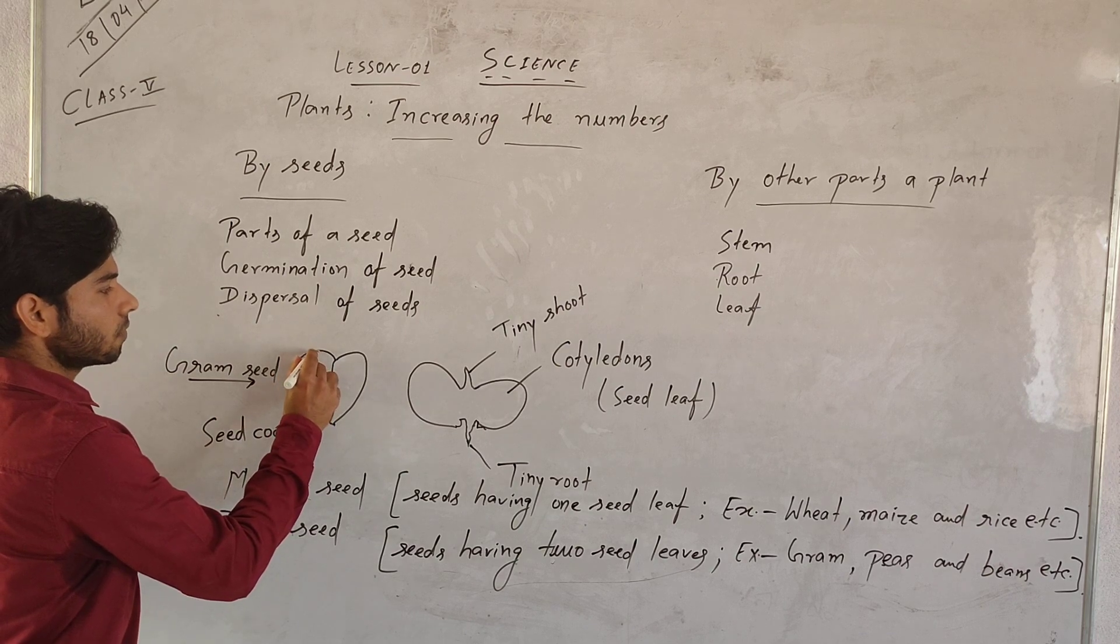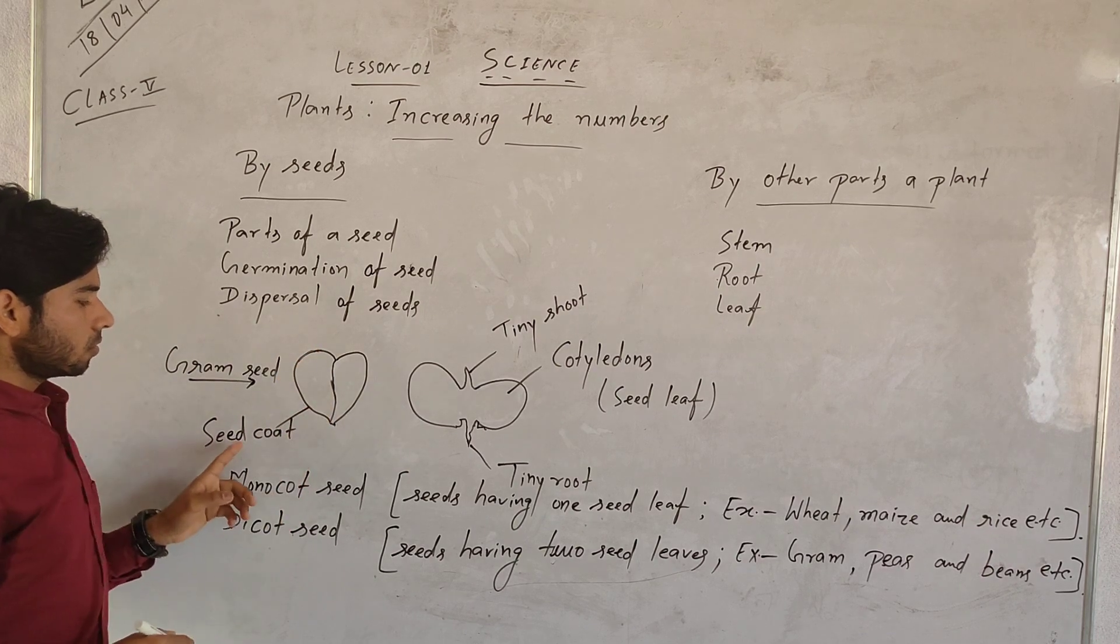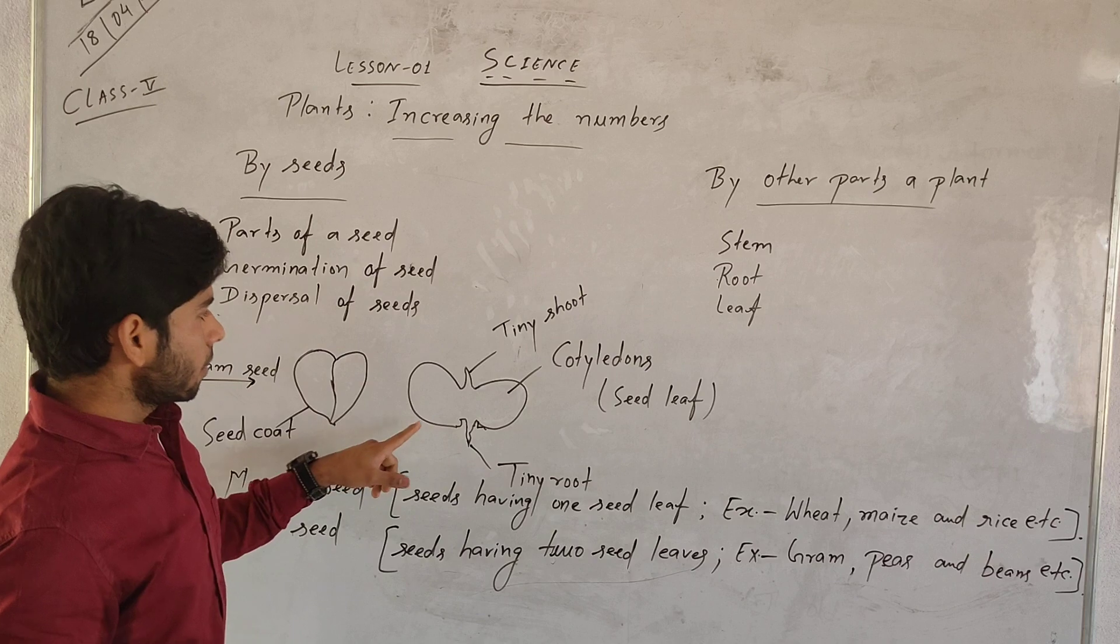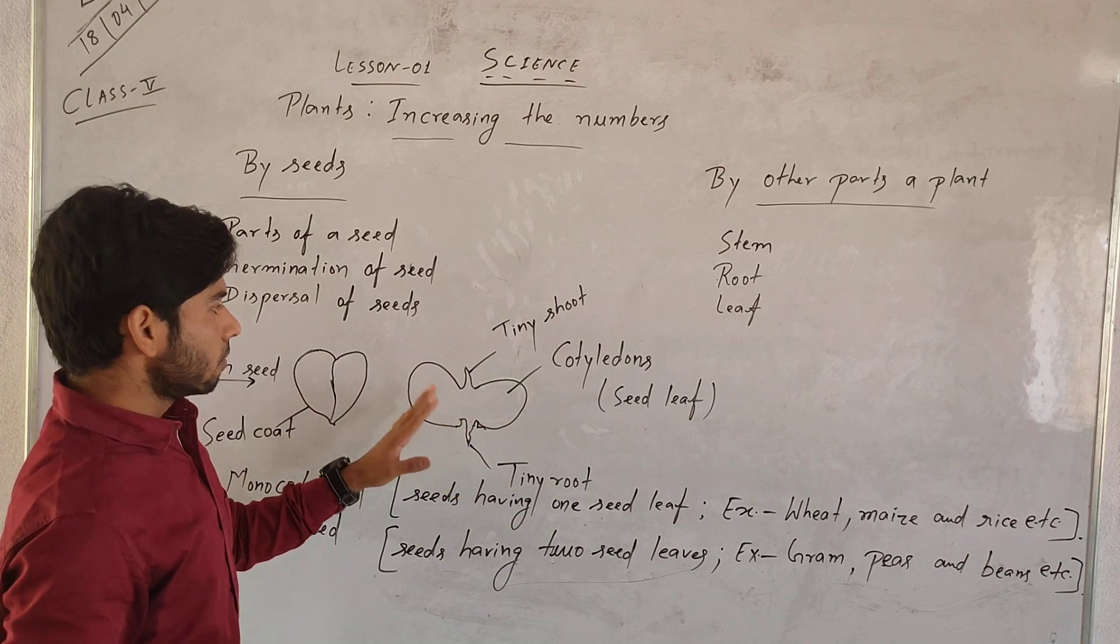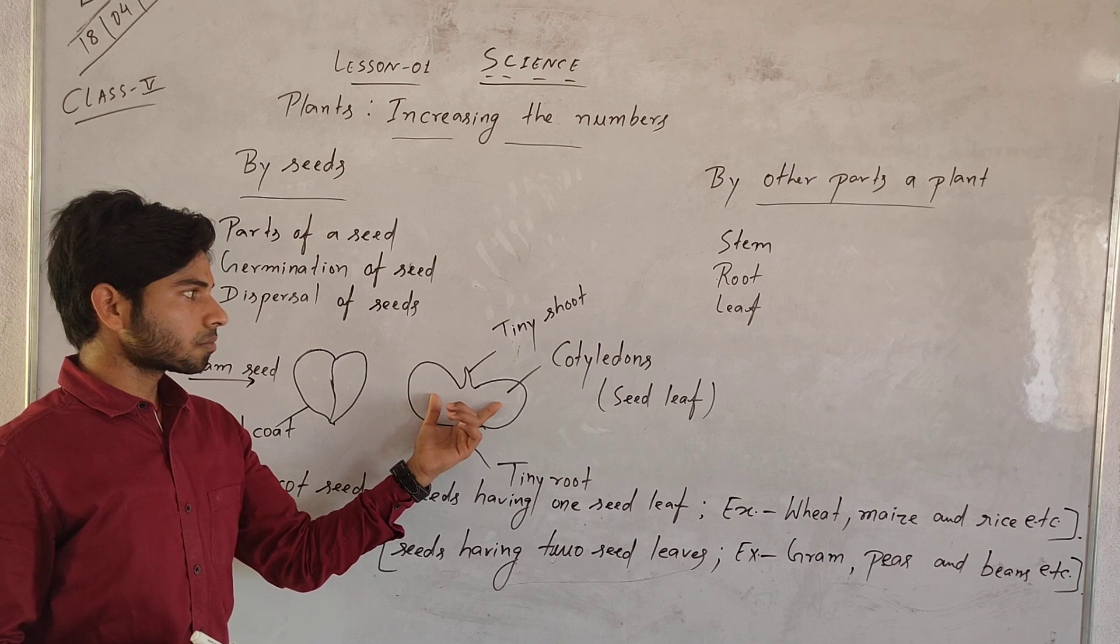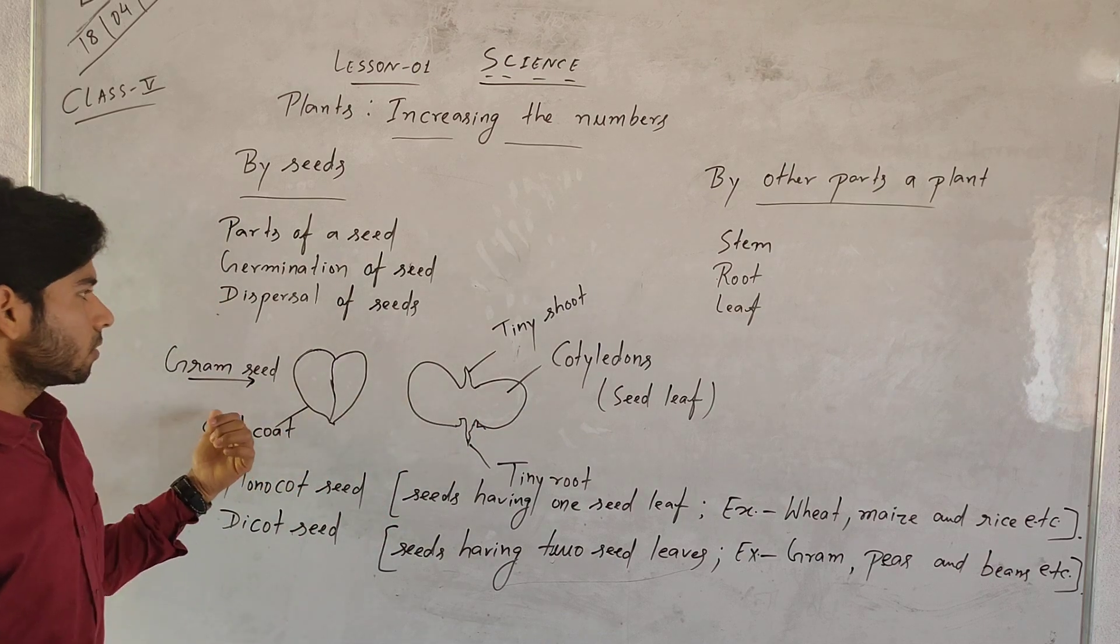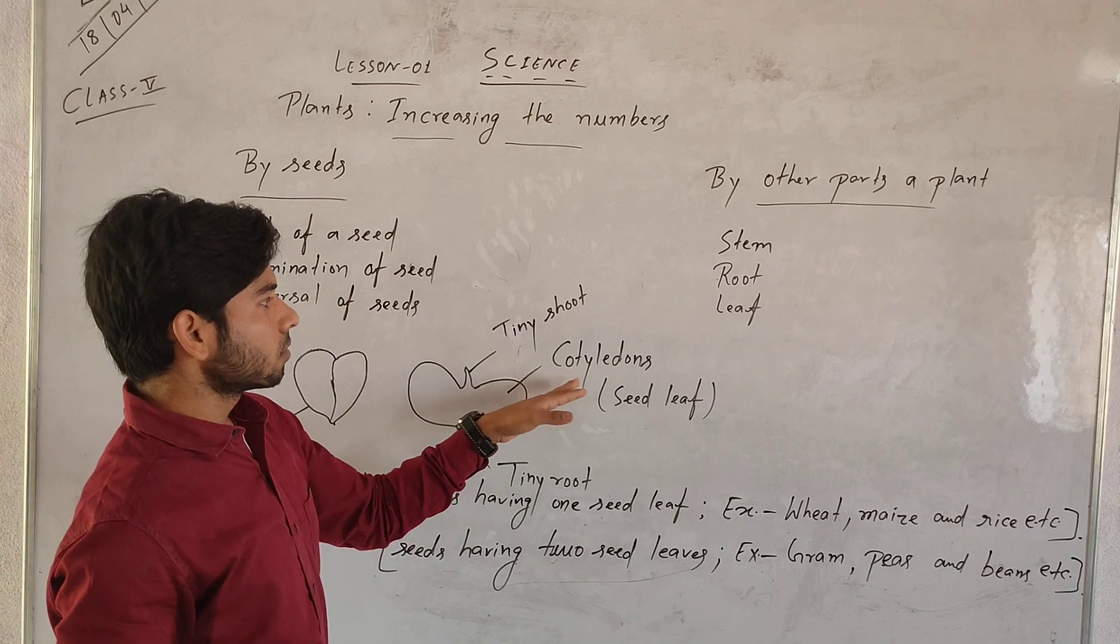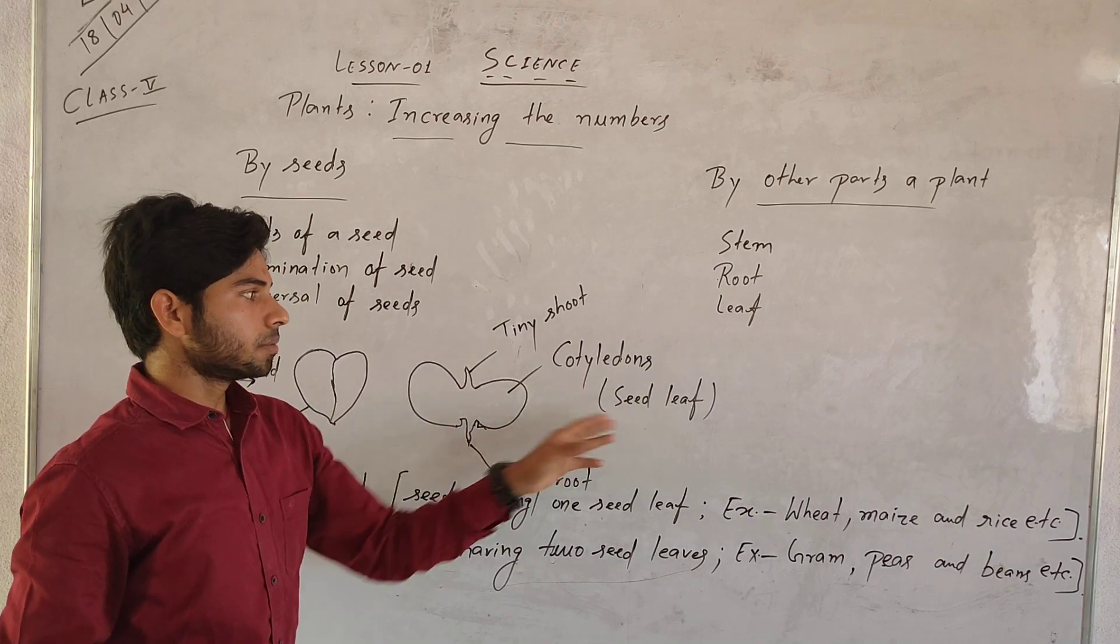The outer covering of the seed is called seed coat. And if we remove the cover, we find two leaves. Because this is gram seed, it has two leaves called cotyledons or seed leaves.